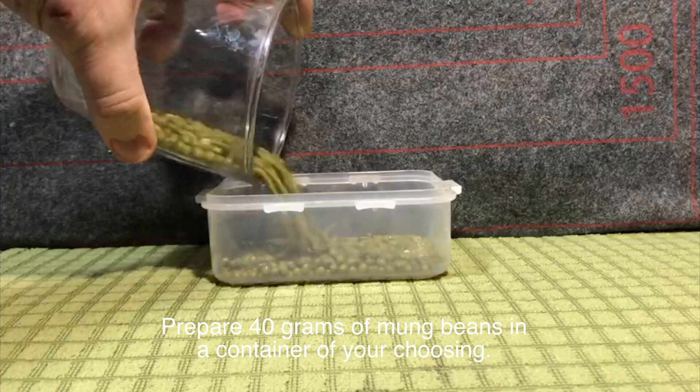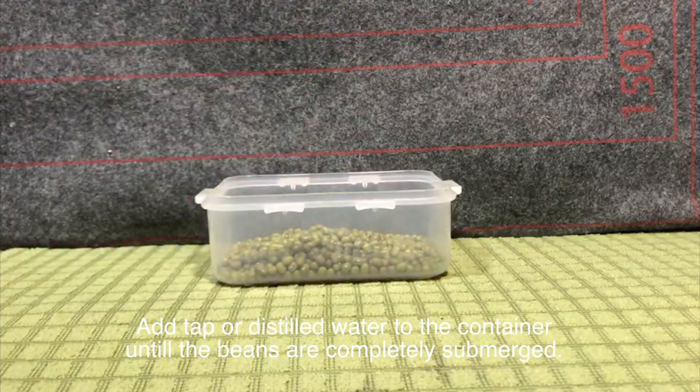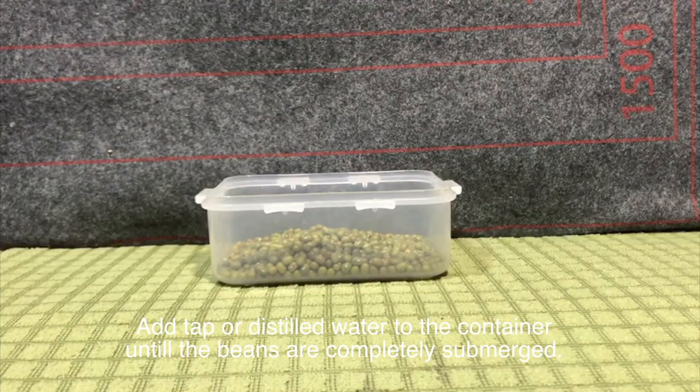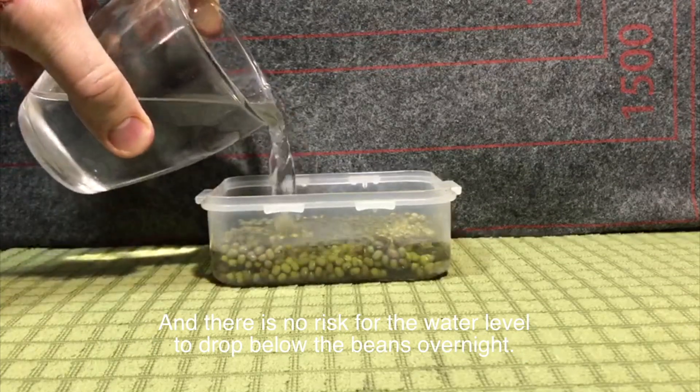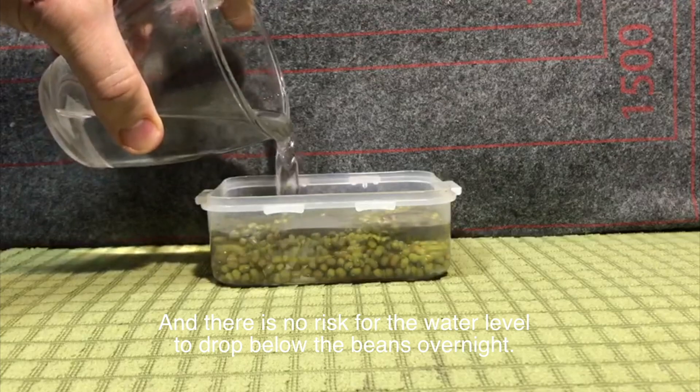Part one: overnight bean preparation. Prepare 40 grams of mung beans in a container of your choosing. Add tap or distilled water to the container until the beans are completely submerged and there is no risk for the water level to drop below the beans overnight.